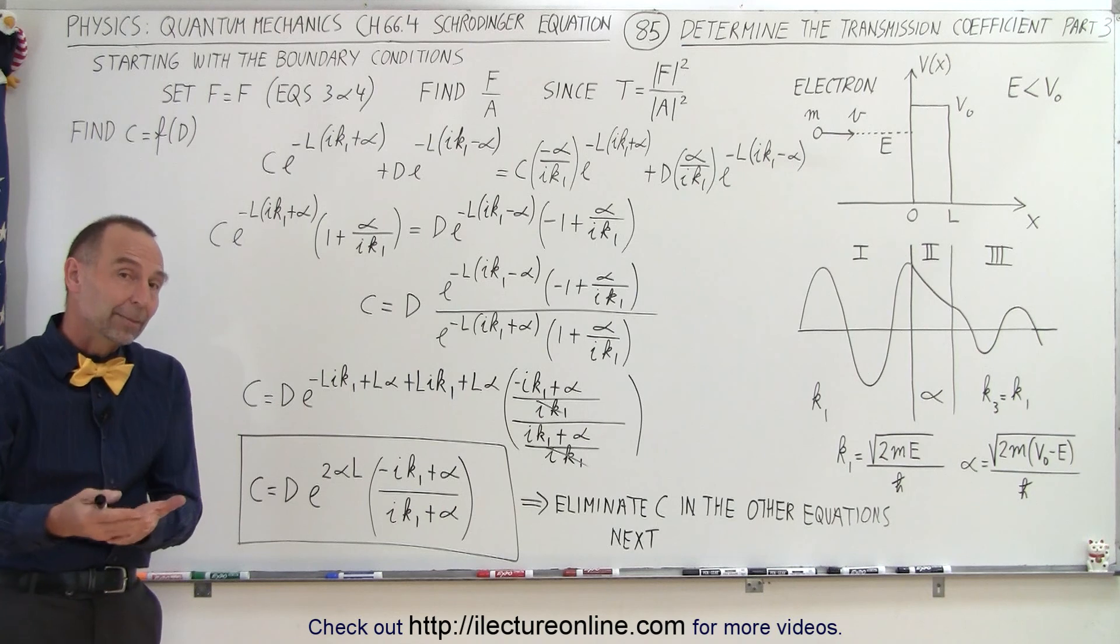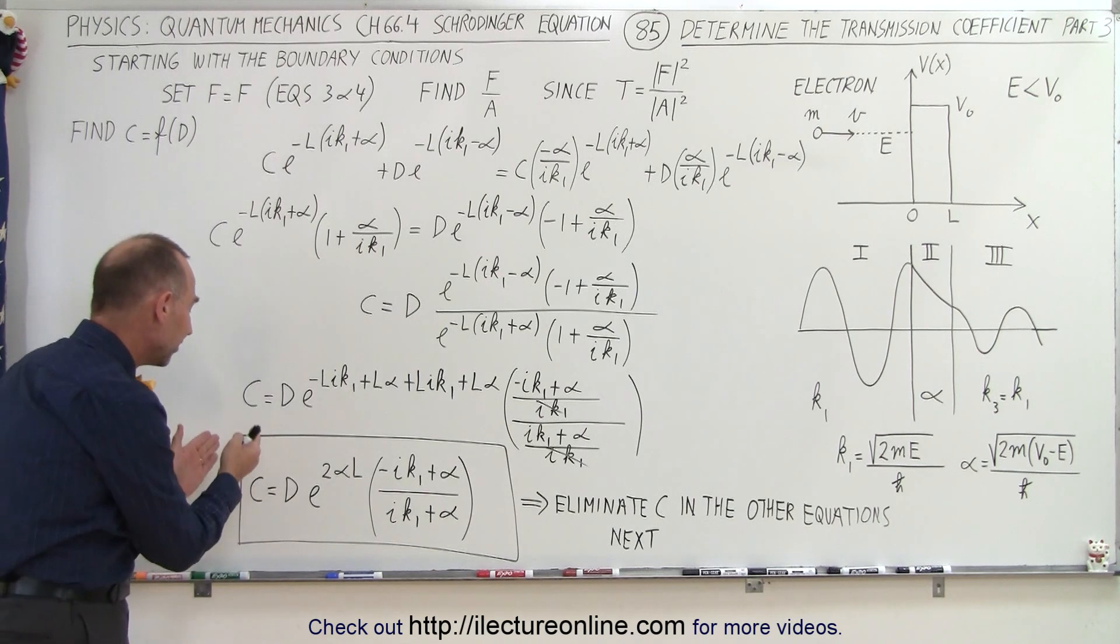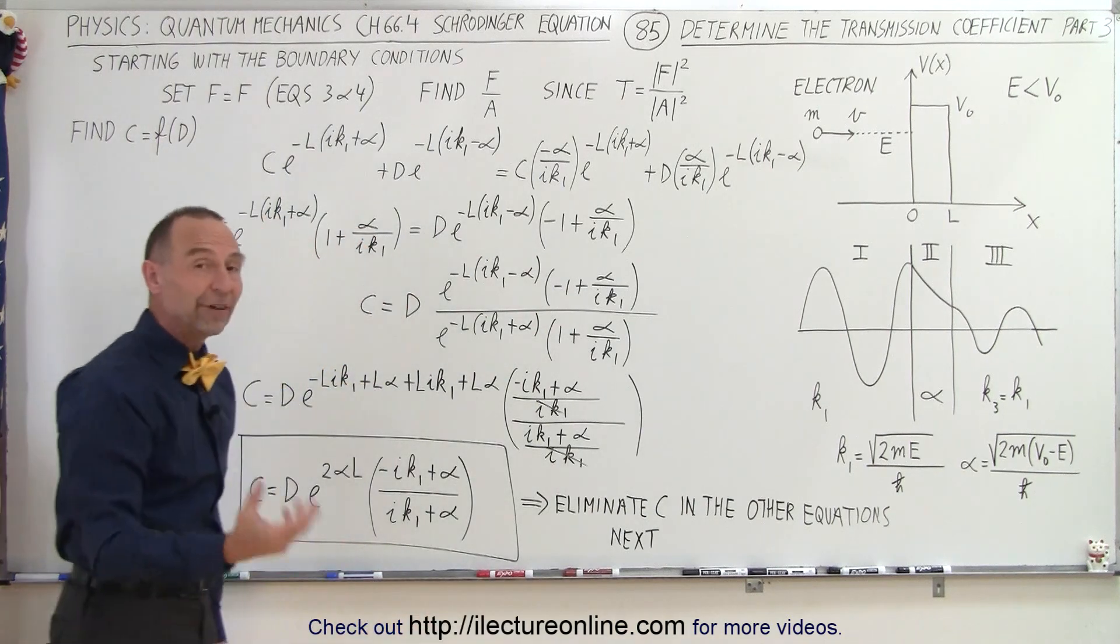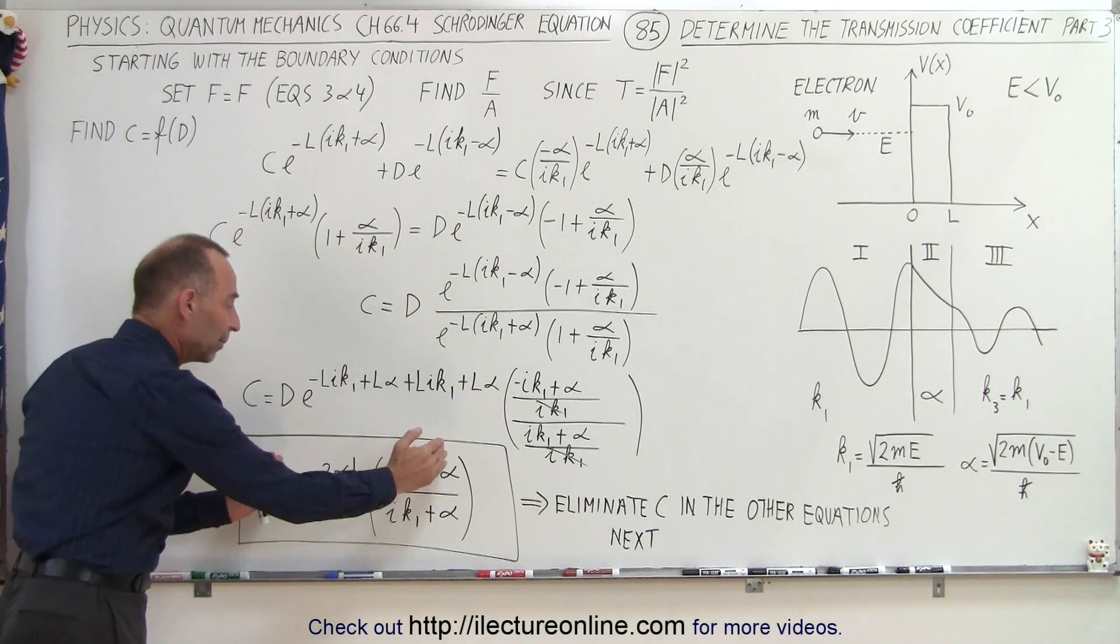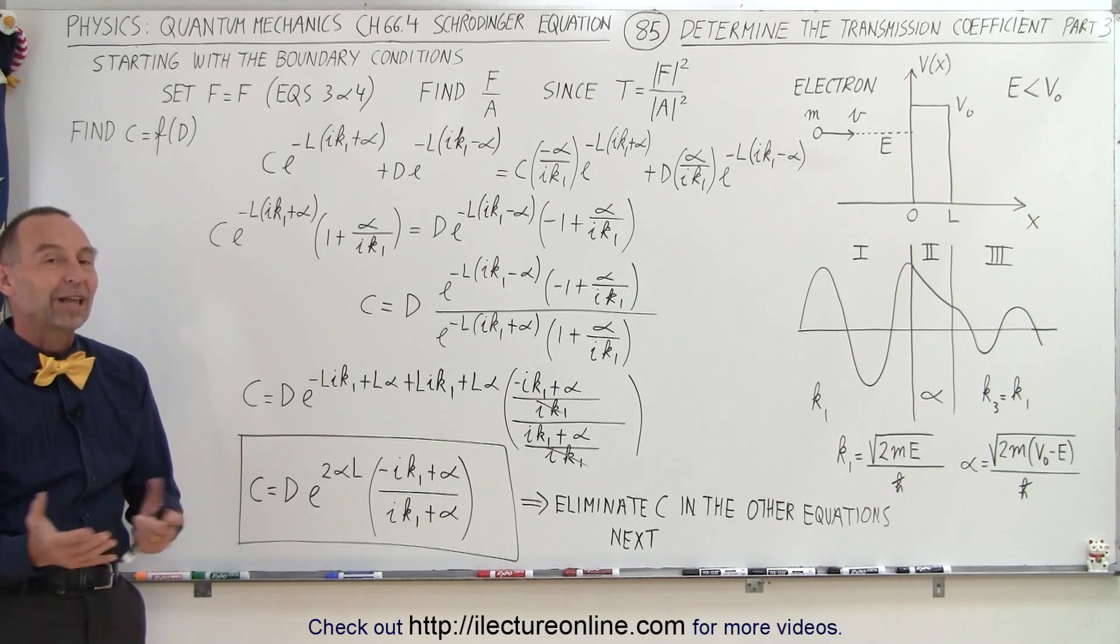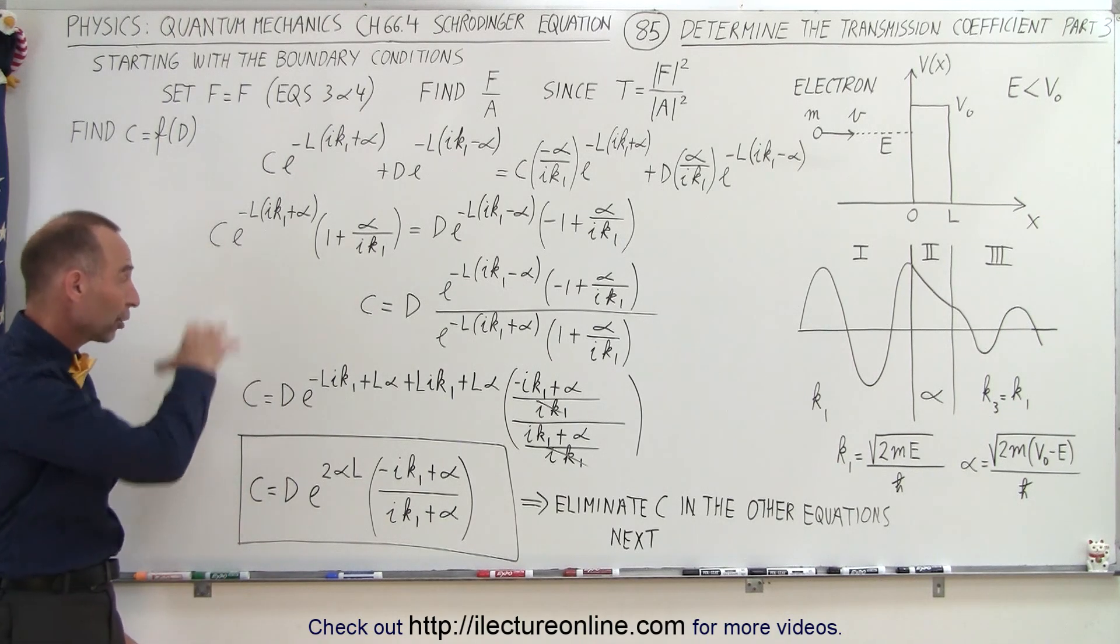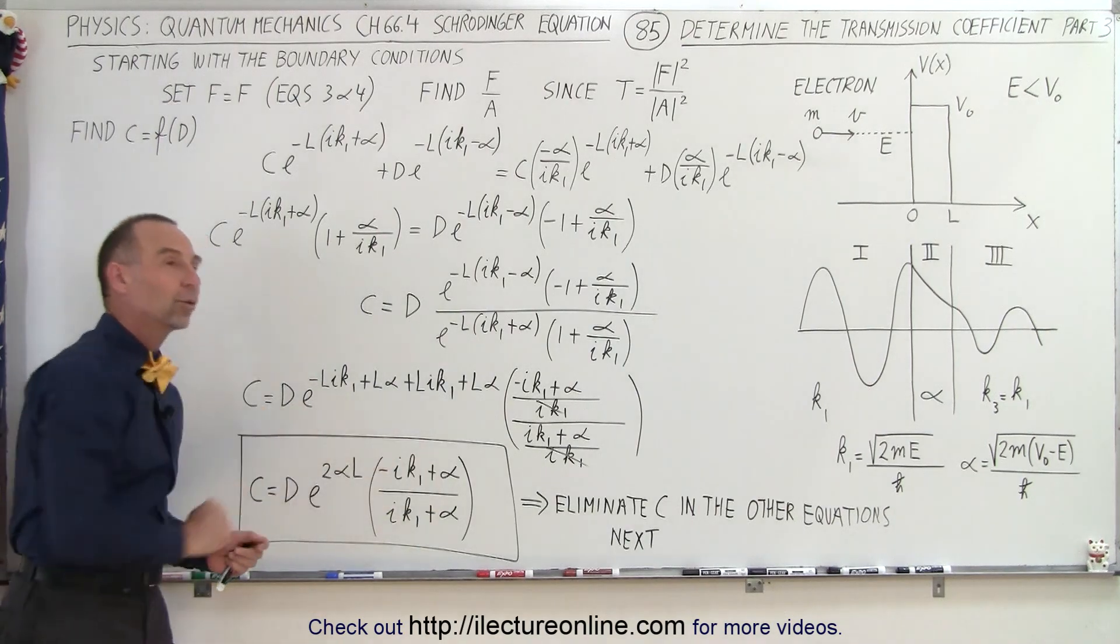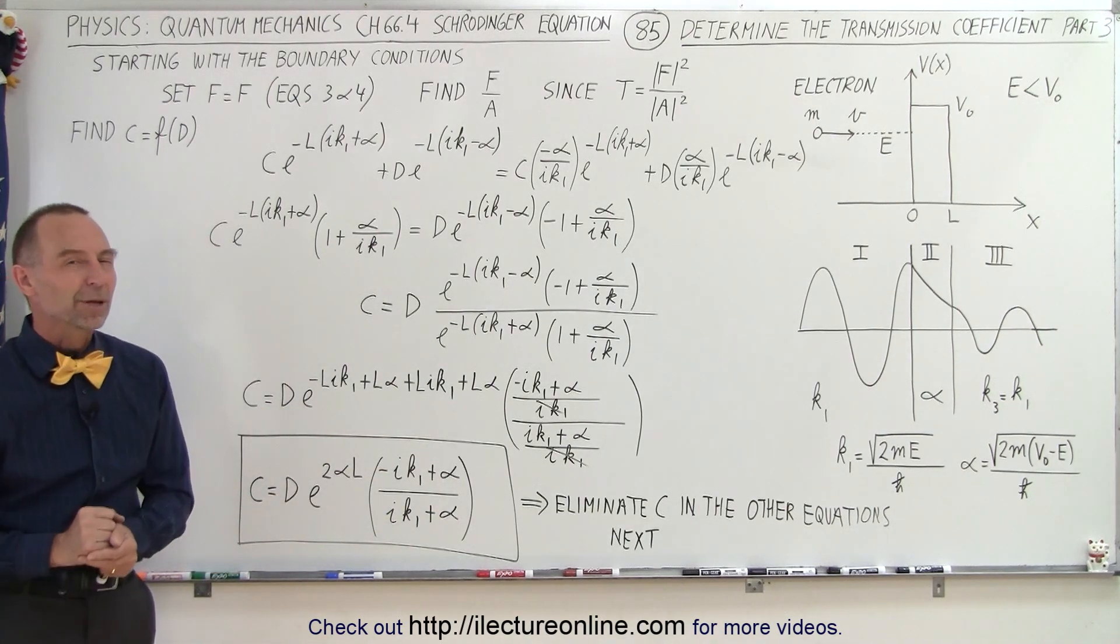So the next step, since we've already eliminated A, is to eliminate C from all the equations by simply substituting for every C the quantity D times this quantity right there. So that's our next step, is to go back to all our equations and eliminate C by substituting C by this quantity. That's going to be our next video.